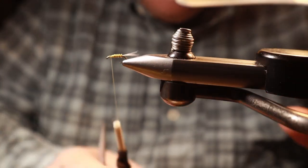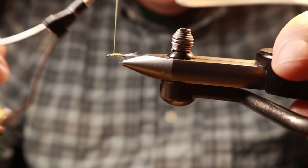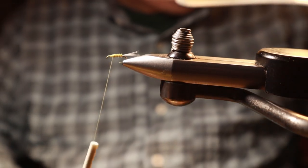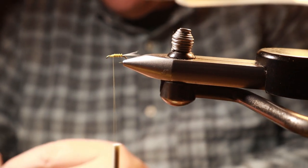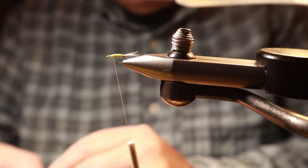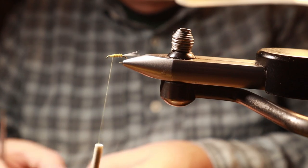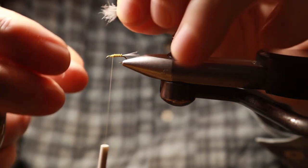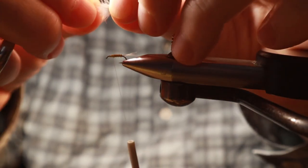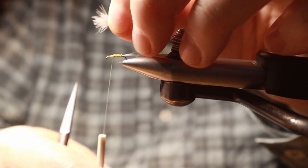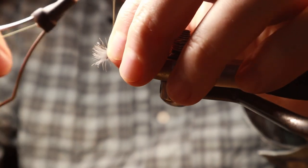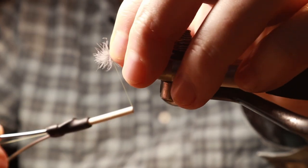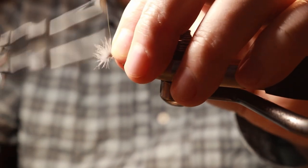With that done we're going to go for our CDC puffs from Hairline, and what I usually use is three puffs for our comparidun. Some of the other flies I go lighter if I want them to sink a little bit more, but this one I want to float and ride in the film. I'm looking for these when they stand up to be approximately the length of the shank of the hook.